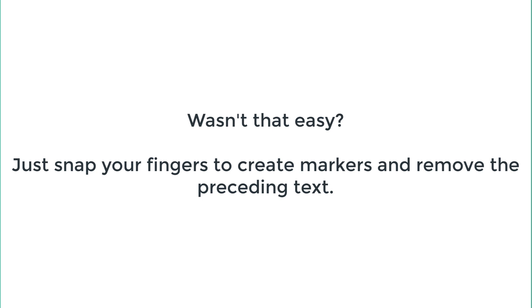So that's it, that's how easy it is. I hope next time when you are recording your audio in front of your microphone, you won't have to break a sweat if you make a mistake. It's very easy to remove your mistake — you just have to snap your fingers every time you make a mistake. And then in post-production, you just have to locate those markers and remove the piece of text right before those markers. That's how I do it, and it's going to save you a lot of editing time.